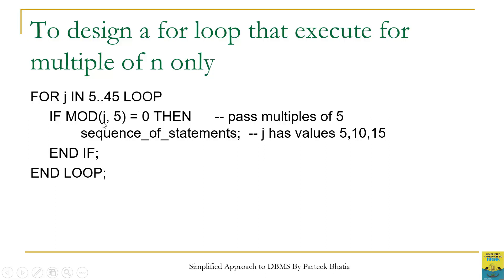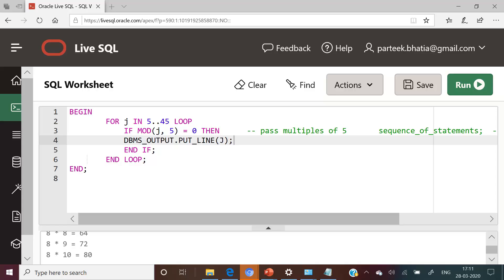This again will not execute for 11, 12, 13, 14 but will execute for 15 and so on. So ultimately we are able to achieve a jump value of 5. Let us execute this code in Oracle Live to check its output.